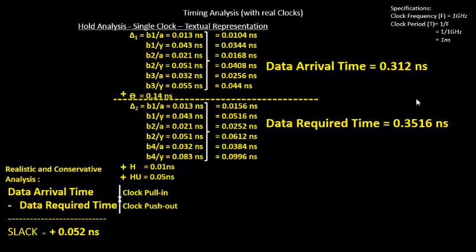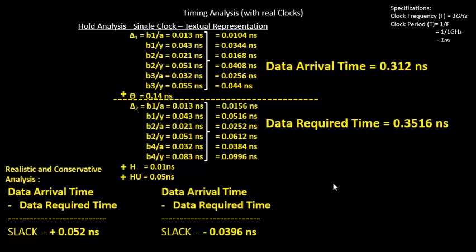So these are our new data arrival and data required times. Based on this, we will have new slack numbers. When we calculate the slack, it turns out to be a negative number — close to 39.6 picoseconds. This is a point of worry because we estimated hold would be clean based on the original underated values, but when we take this scenario on a chip, because of the variations, there is always a possibility that one die or one section of the chip might fail.